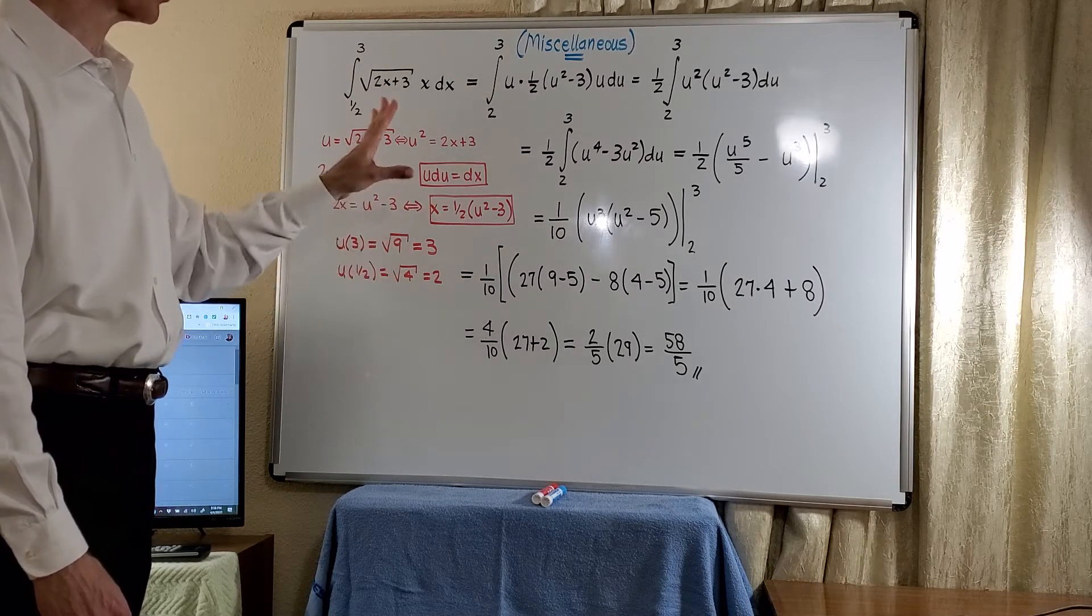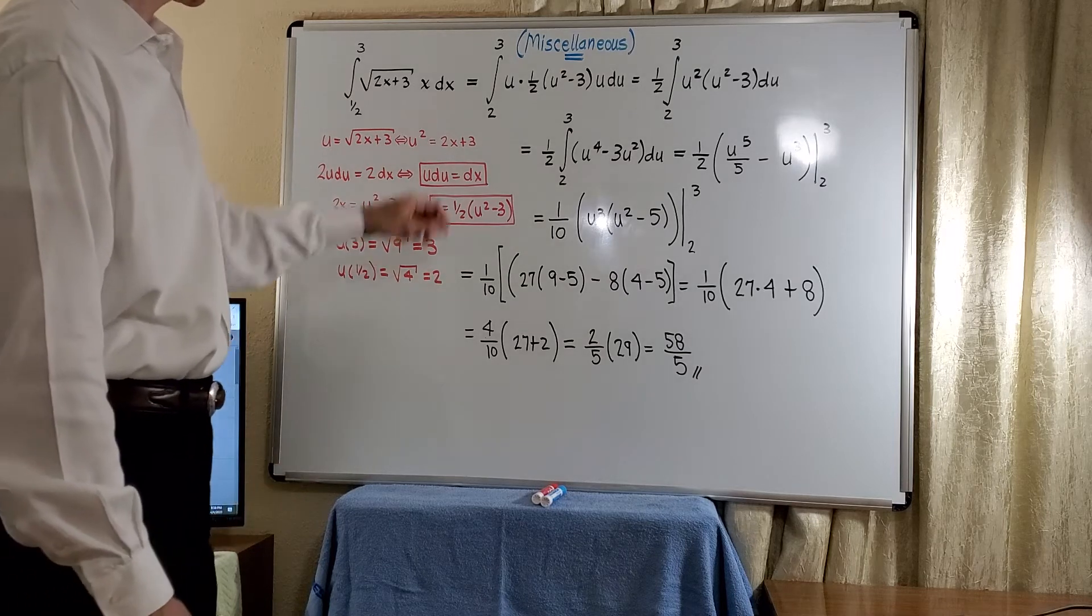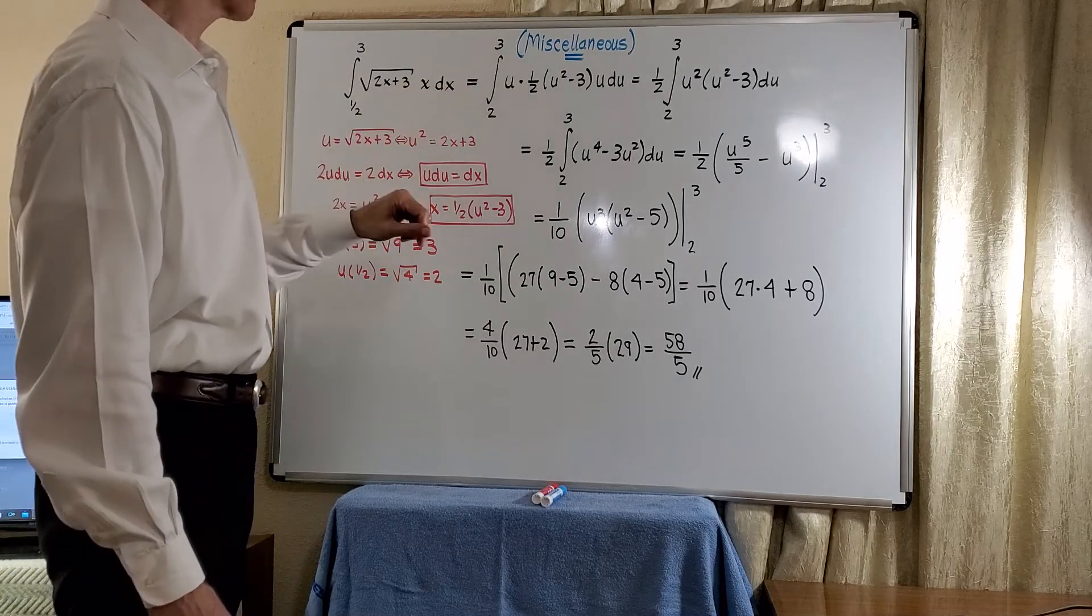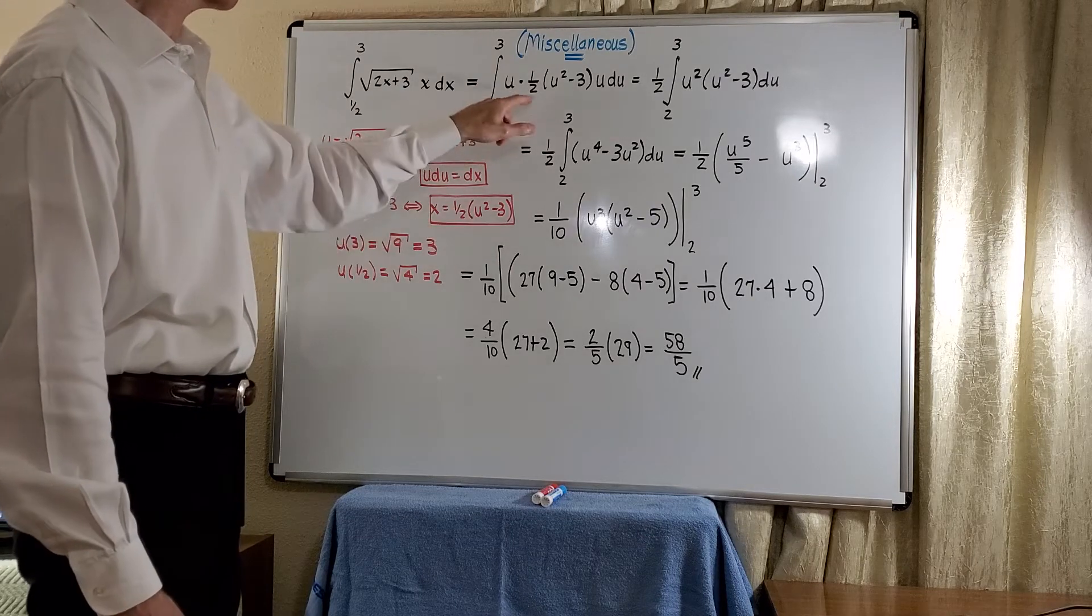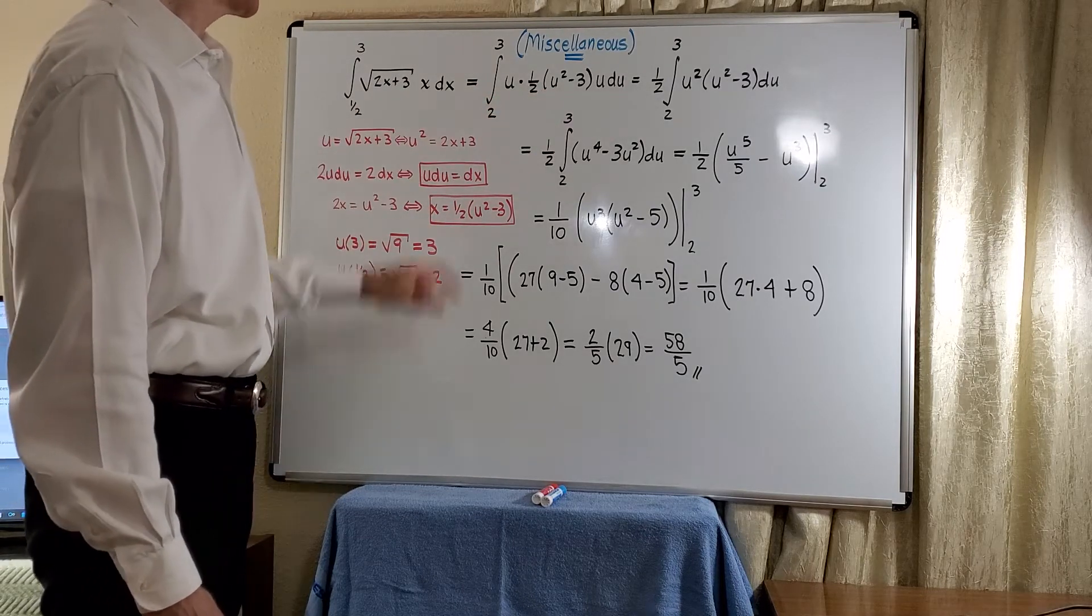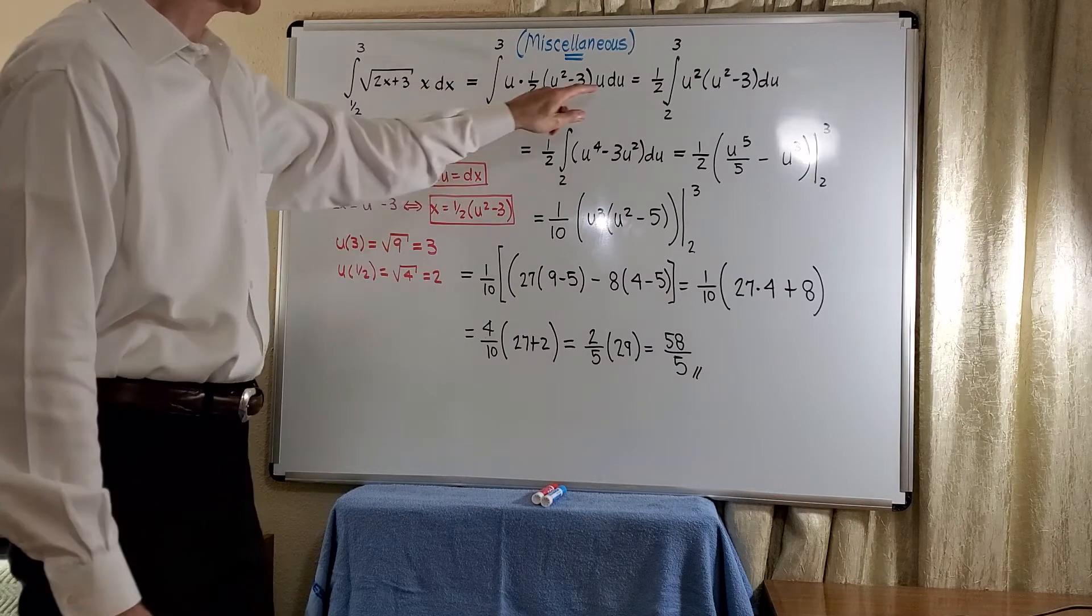So now we're ready to transform the integral. So we have lower limit 2, upper limit 3. The radical is u. And then we have x, 1/2 the quantity u squared minus 3, and the dx is u du.